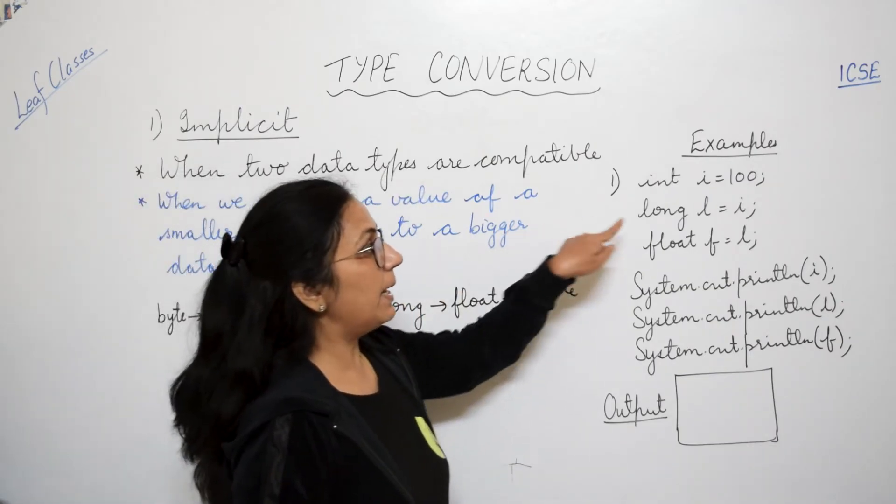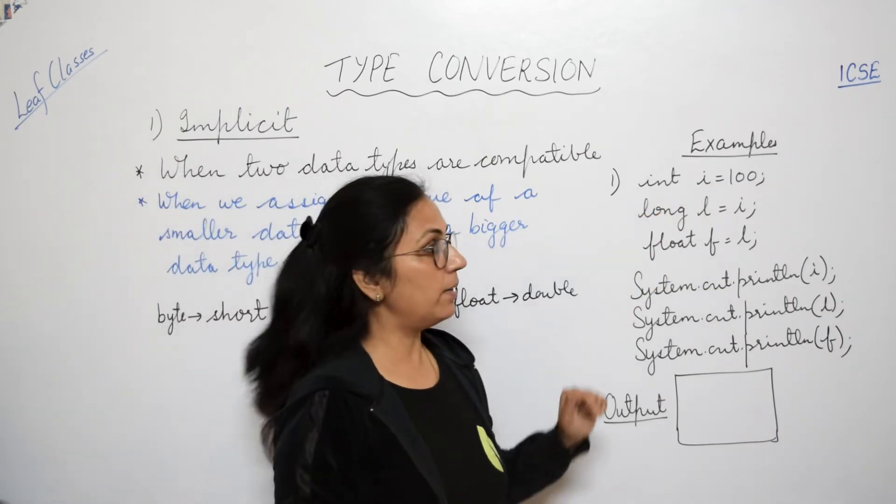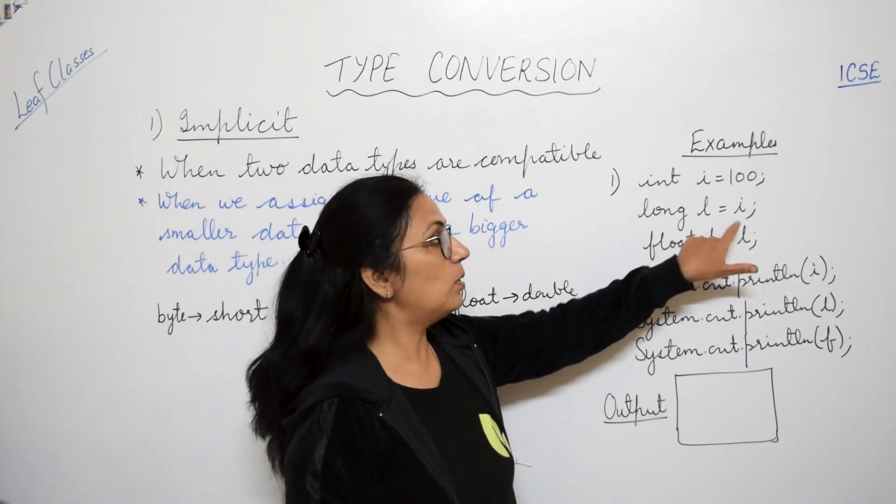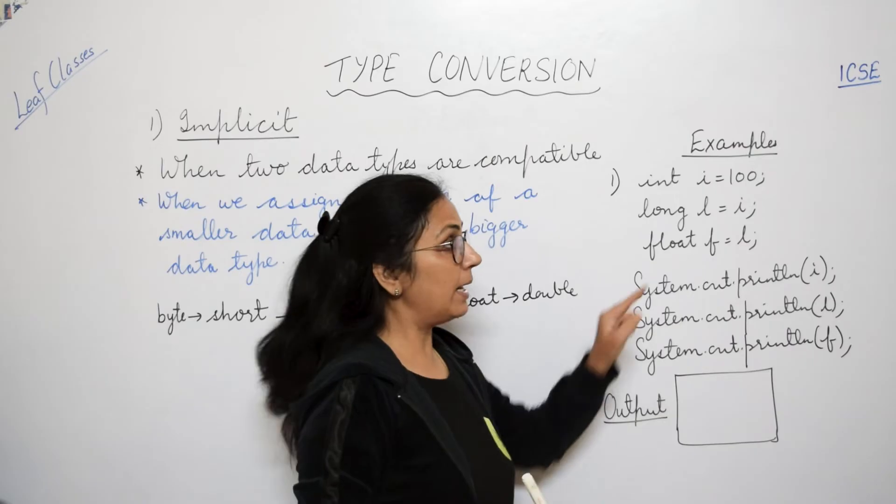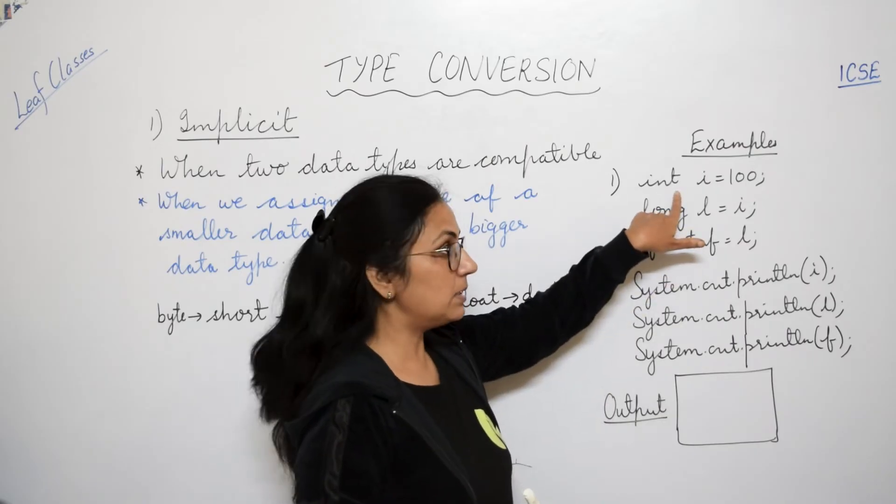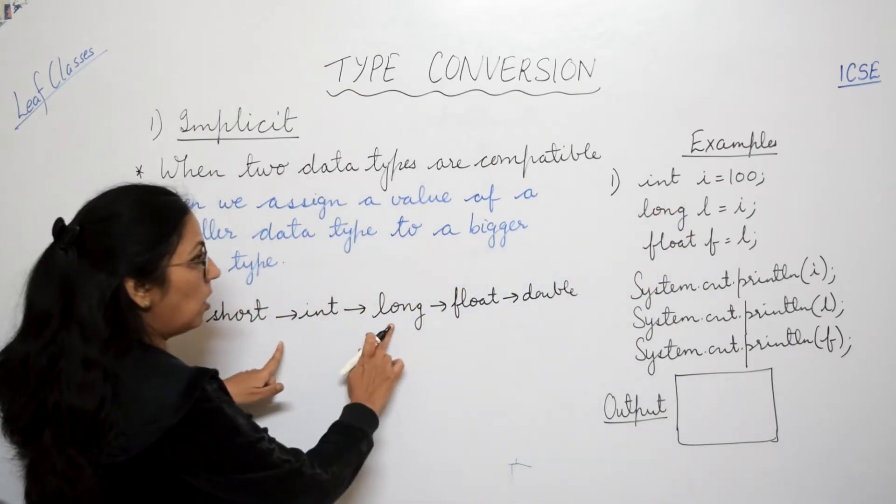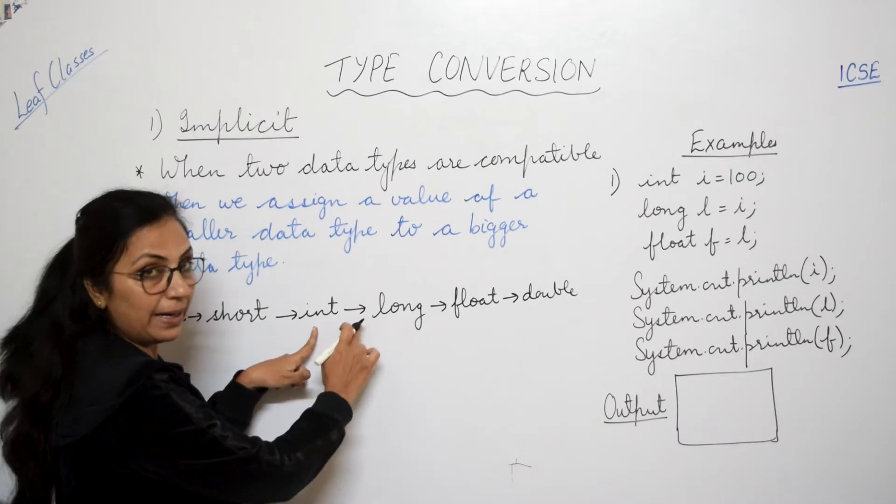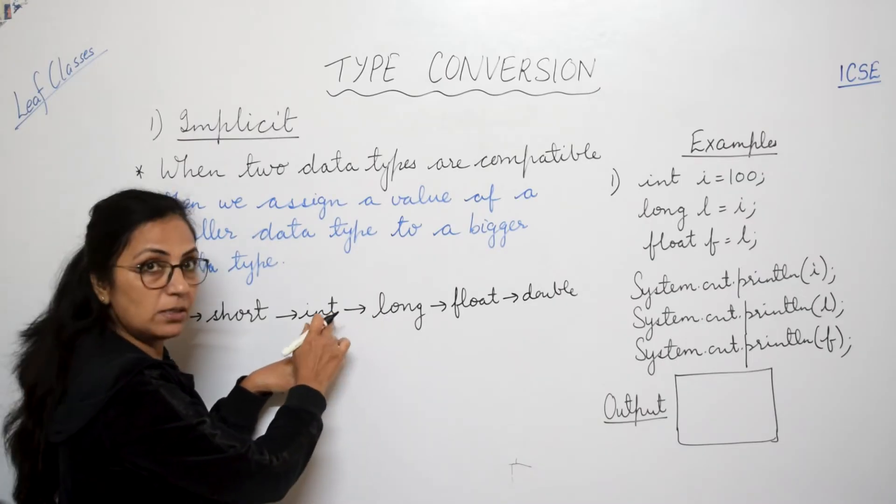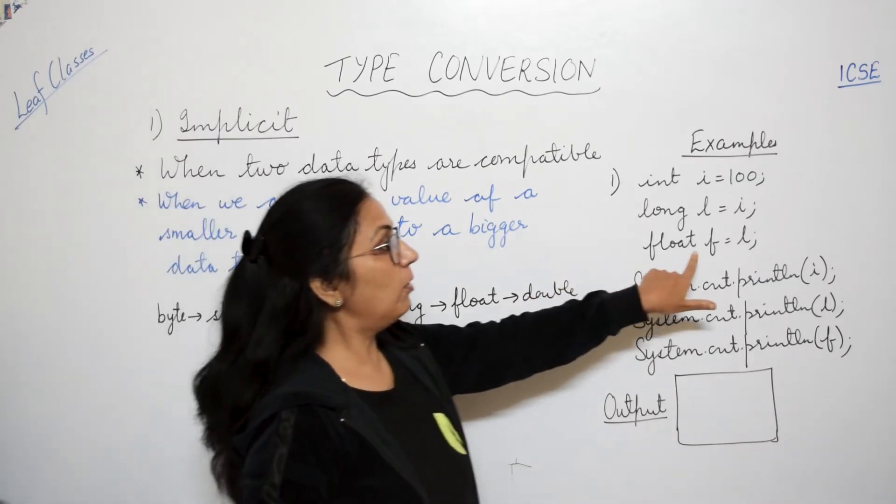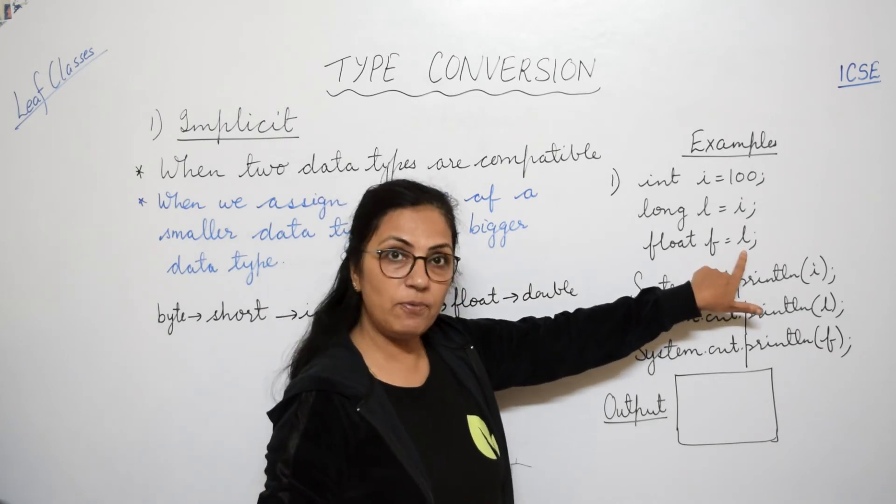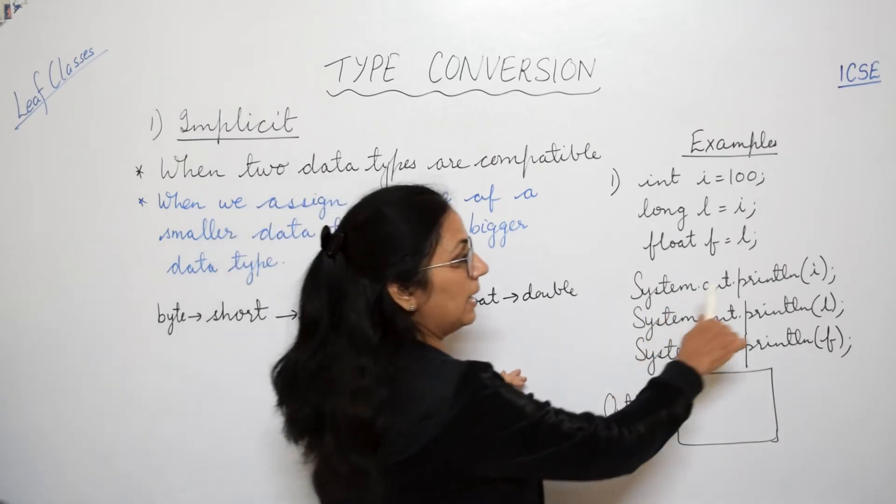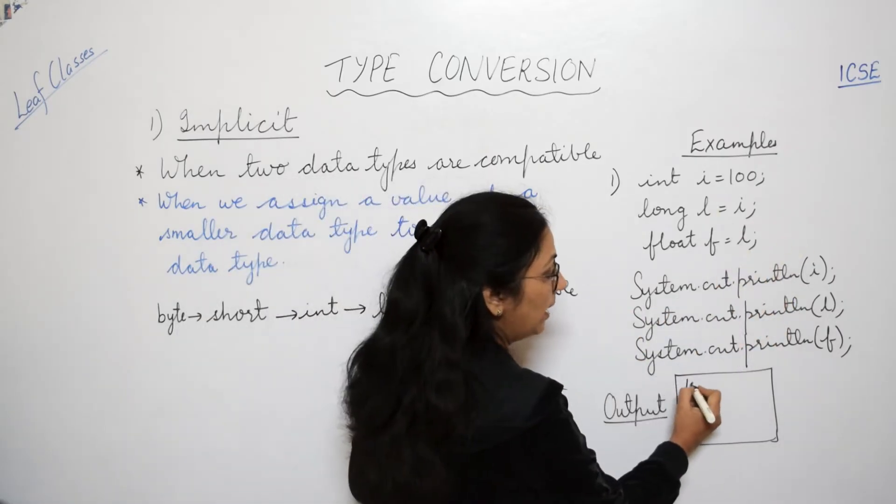Now let us see this example. Int i equals to 100. Long l equals to i. L mein hum kya store kar diye? i. And i ki data type kya hai? Int. So long or int compatible hai? Yes, long mein hum int store kar rahe hain. And float f equals to l. Float mein long type value store ki hai.